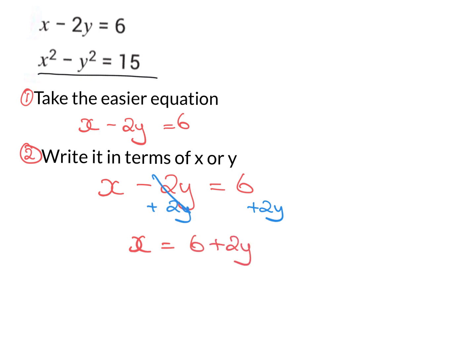They cancel and I'm left with x equals 6 plus 2y. So step one, take the easier equation and write it in terms of x or y. That's step two.